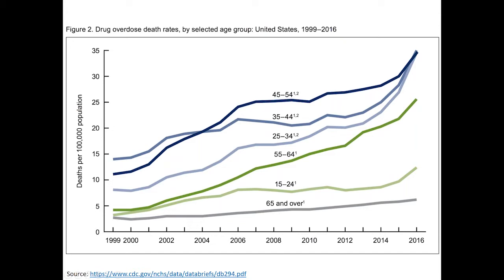Looking by age, overdose used to primarily affect people in middle age - in the early 2000s, the highest rates were in the late 30s and early 40s. Over the last decade or two, the ages most highly affected have shifted. In 2016 for the first time, rates were actually highest in younger people aged 25 to 34, alongside a dramatic increase in older people aged 55 to 64. That's largely due to an intertwined epidemic of illicit drug use with fentanyl and an ongoing epidemic of prescription opioids, which tends to affect older populations more heavily.